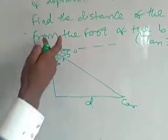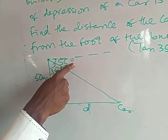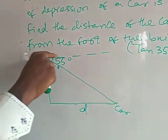This is the diagram. This is the height of the building. This is the car from the foot of the building. This is the angle of depression. The angle here is 90 degrees.